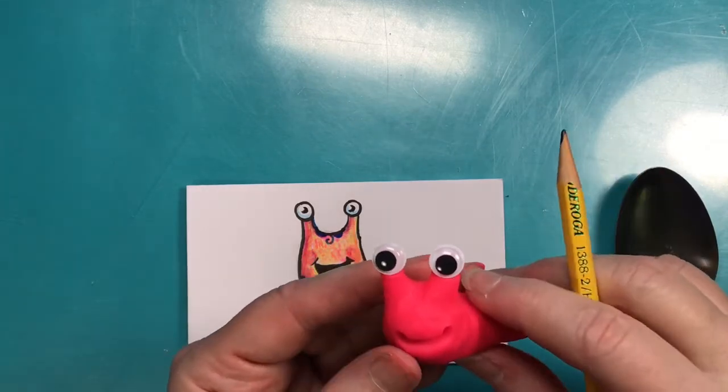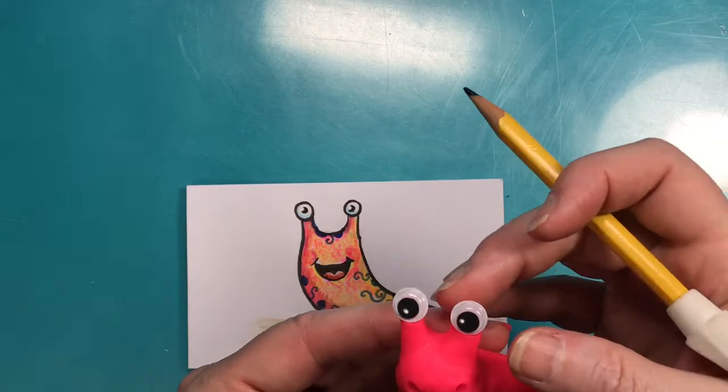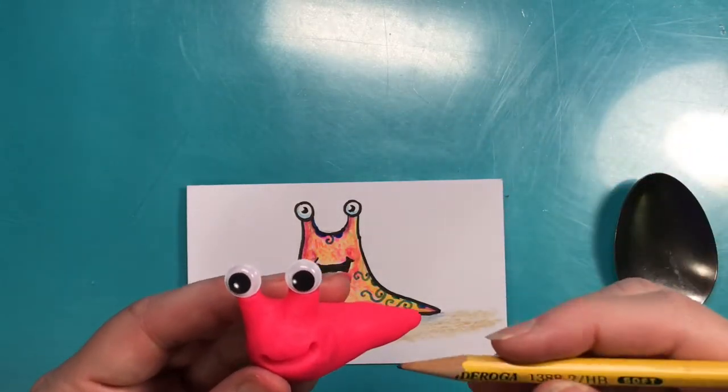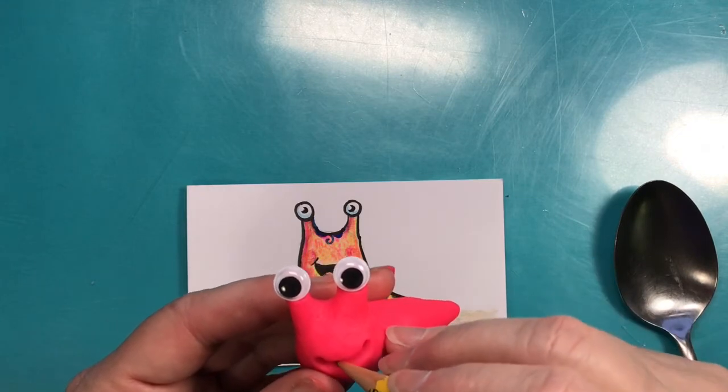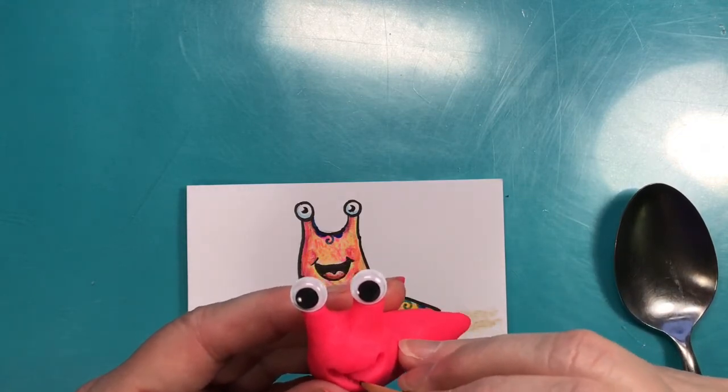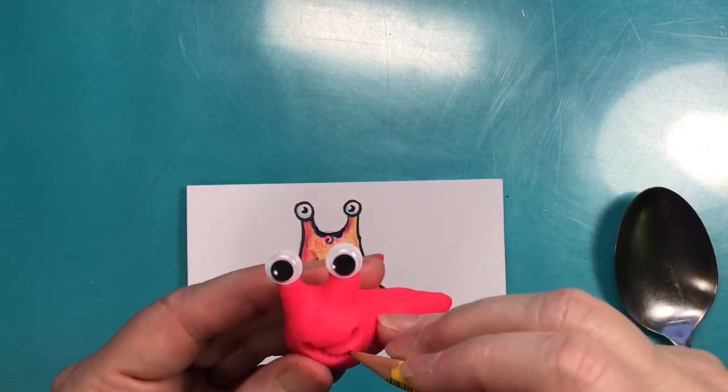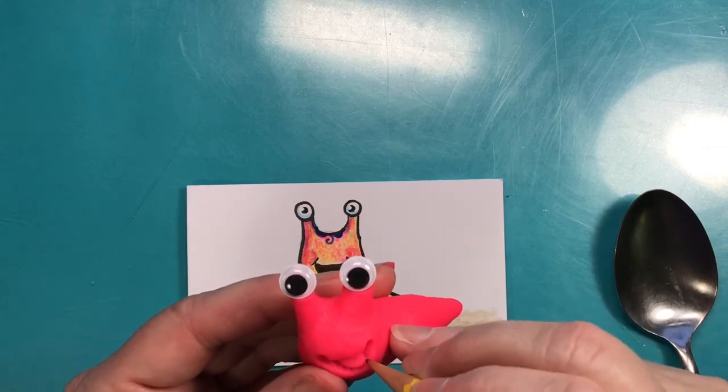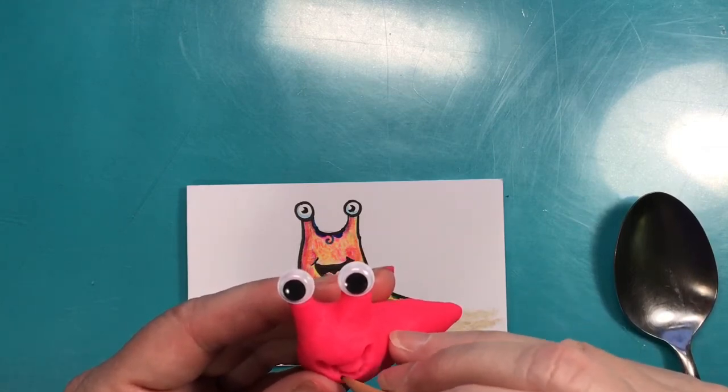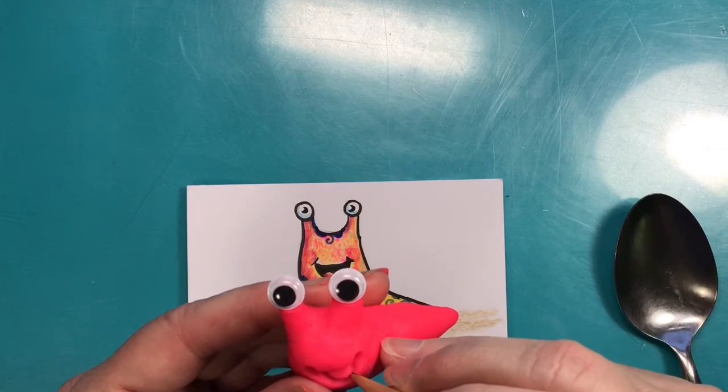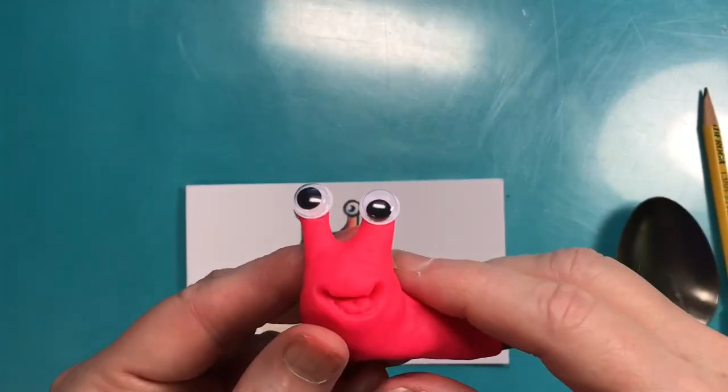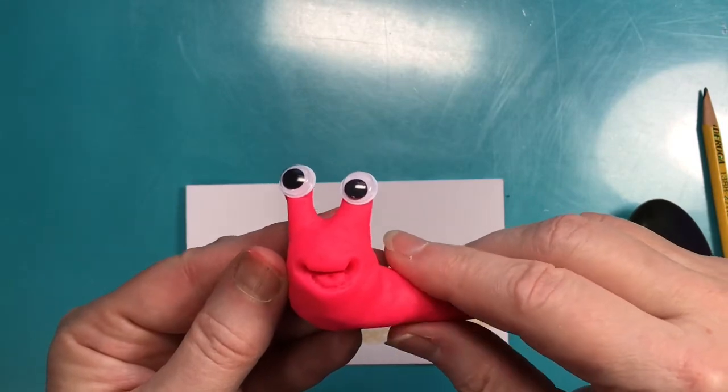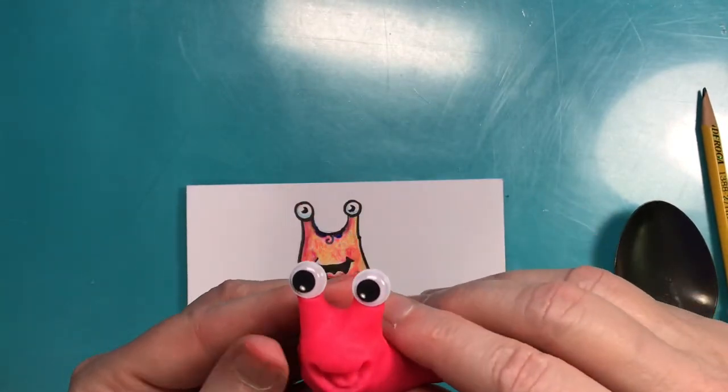There he is, that's pretty good. It's a pretty smiley little slug. I could make a tongue, I could do this to make his tongue, or I could use the spoon to do that too. Let me use the pencil. There's the little slug.